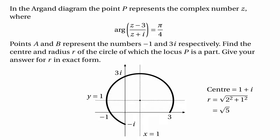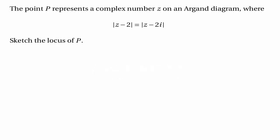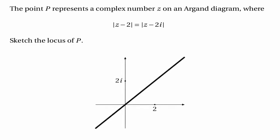That's the end of that question. One more question: question 16. We're told that P represents a complex number where |z minus 2| equals |z minus 2i|, and first we need to find the locus of P. This is the locus of points which are the same distance away from 2 as from 2i. The locus of such points is the perpendicular bisector of the line joining 2 to 2i, which is a diagonal line that looks rather like y equals x.